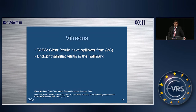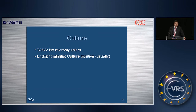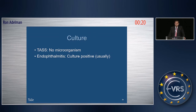In TASS the vitreous is clear, while in endophthalmitis vitritis is the hallmark. However, when corneal edema is present, it is very difficult to judge whether there is vitreous inflammation or not, and sometimes we must rely on ultrasound. By definition, TASS has no microorganisms while endophthalmitis does — but culture results take three days, so this is not immediately helpful clinically.